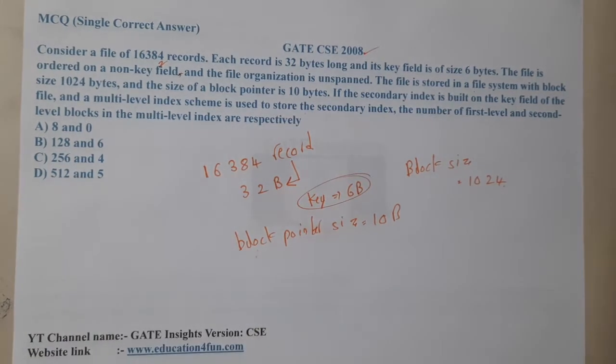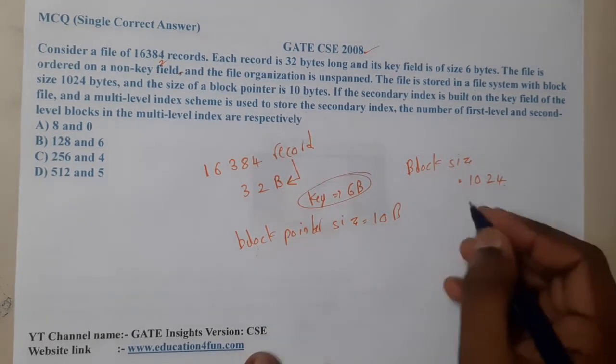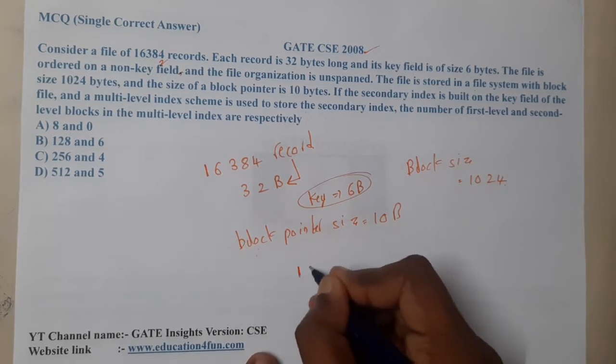Let us start calculating it one by one. Here they clearly told that they are trying to perform secondary indexing on non-key field and primary or first level indexing on key attribute. Let us start.